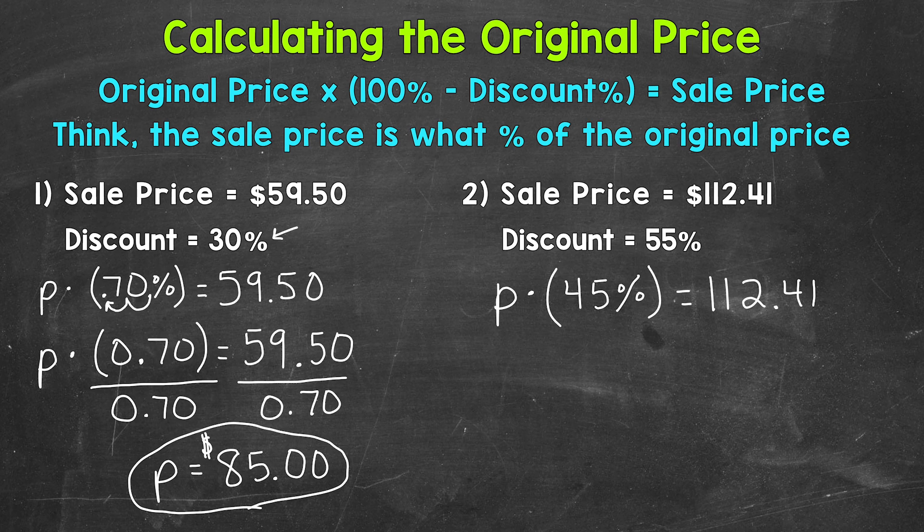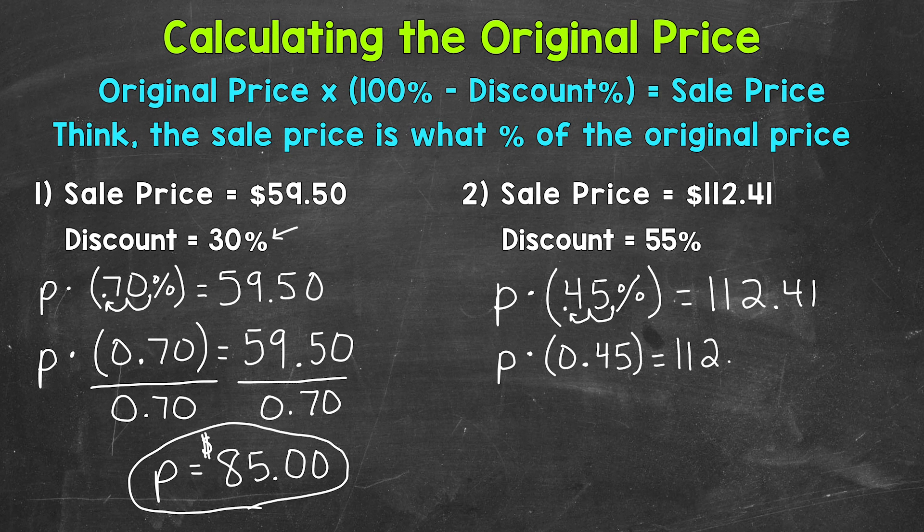Let's convert our percent to a decimal by moving the decimal twice to the left. Remember a decimal comes at the end of a whole number. So once, twice, and we get 0.45. So let's rewrite this in decimal form. So 0.45 and that gives us our sale price. We will rewrite that.